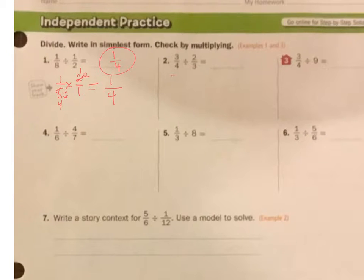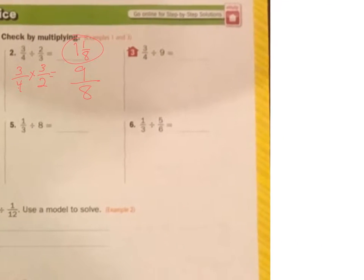Number 2. Keep that, change that, and change that. 3 times 3 is 9, 4 times 2 is 8. So it's 9/8, or it's 1 and 1/8. Either way. Same thing. I guess I like the 1 and 1/8 better.